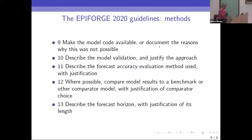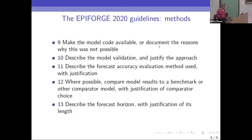Methods of model validation need to be described in detail, and the approach justified. You do increasingly get that now in medicine, with people actually saying whether models didn't fit the data, or that they've checked them and they're robust to certain kinds of deviations. I think that's incredibly important. And there needs to be precision about the forecast accuracy evaluation method used and why that one was chosen — there are different ways you can do things, and it's quite helpful to the reader to know what that is.